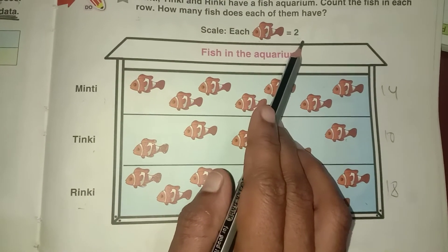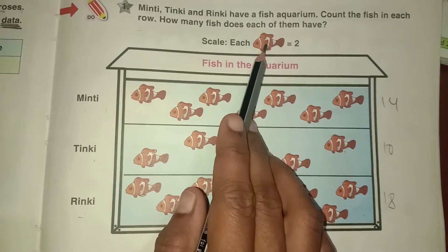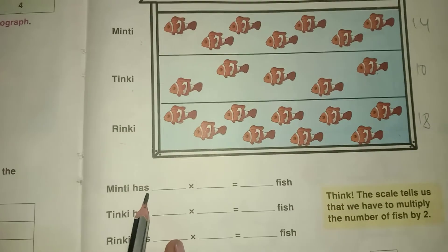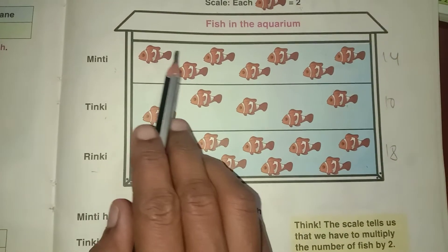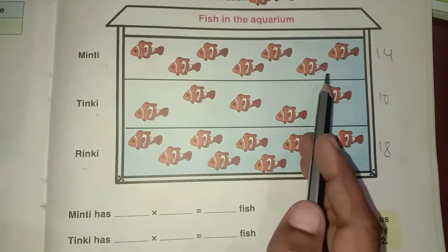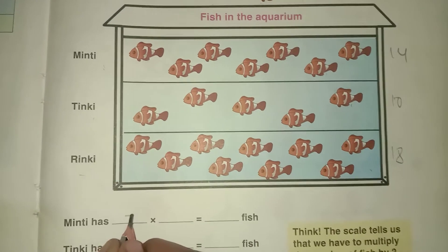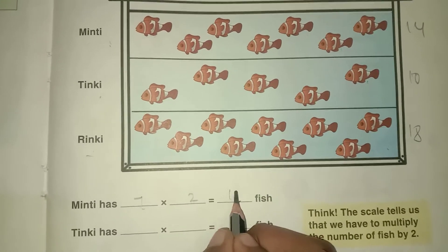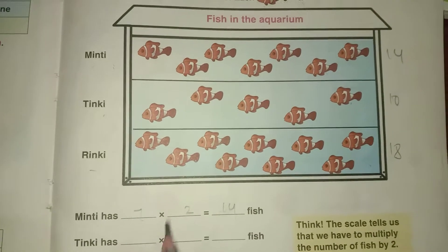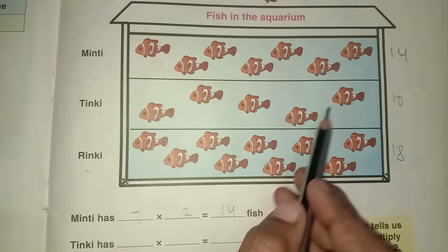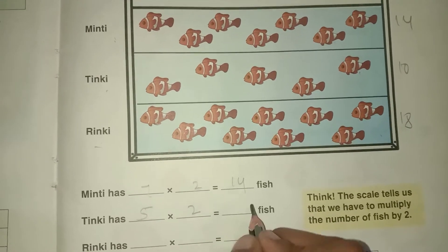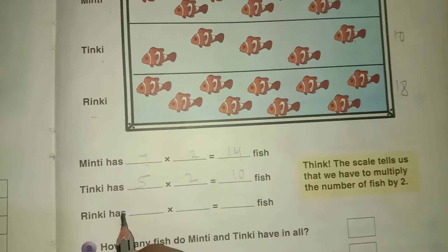You have to consider one fish means two. Minty has totally 1, 2, 3, 4, 5, 6, 7, seven fish means 7 into 2, 14 fish. And Tinky has 1, 2, 3, 4, 5, five fish, one fish means two, 5 into 2 is equal to 10 fish. Rinky has 9 into 2, 18 fish.